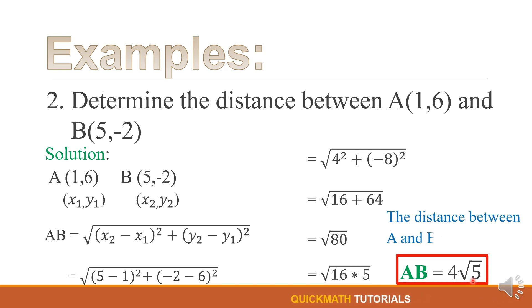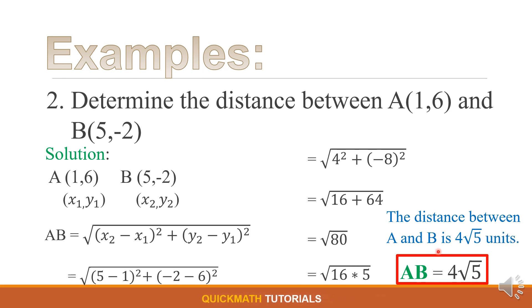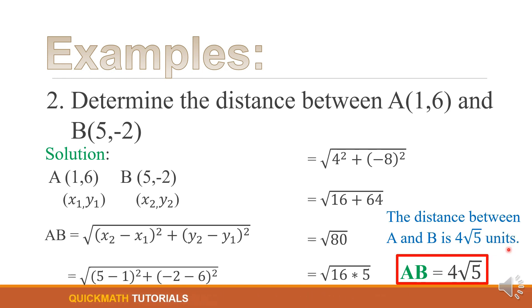Therefore, the distance between A and B is 4 square root of 5 units.